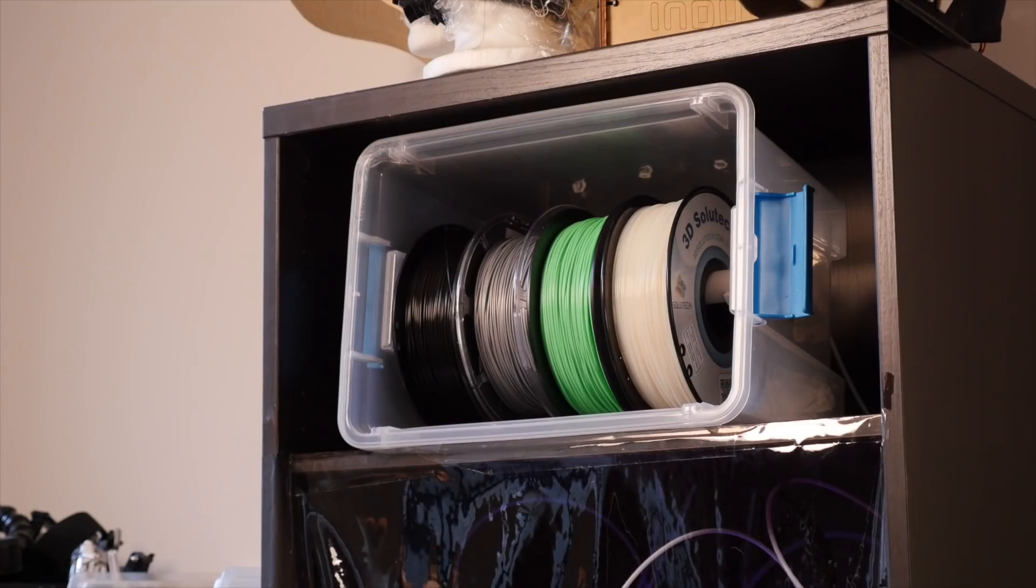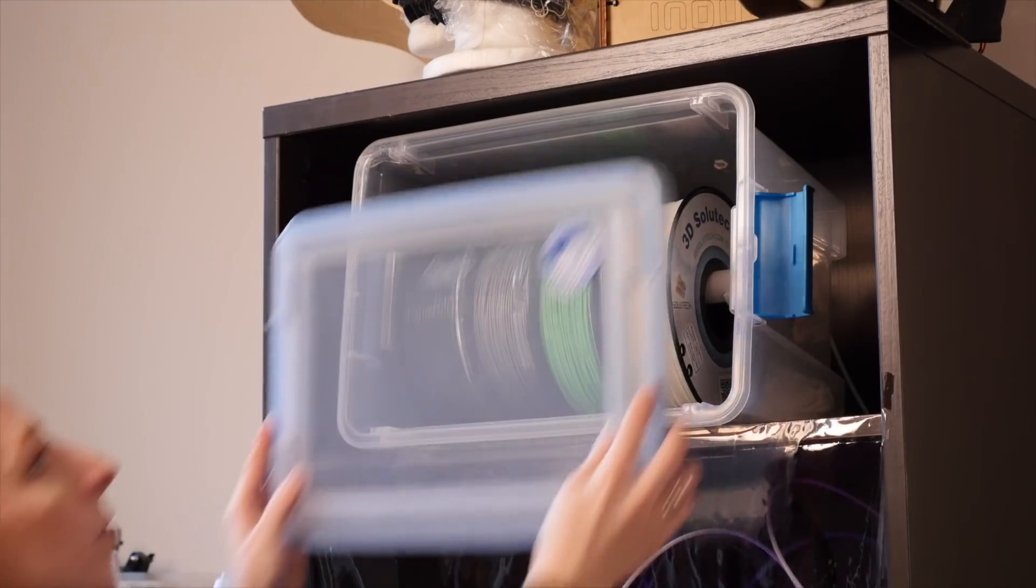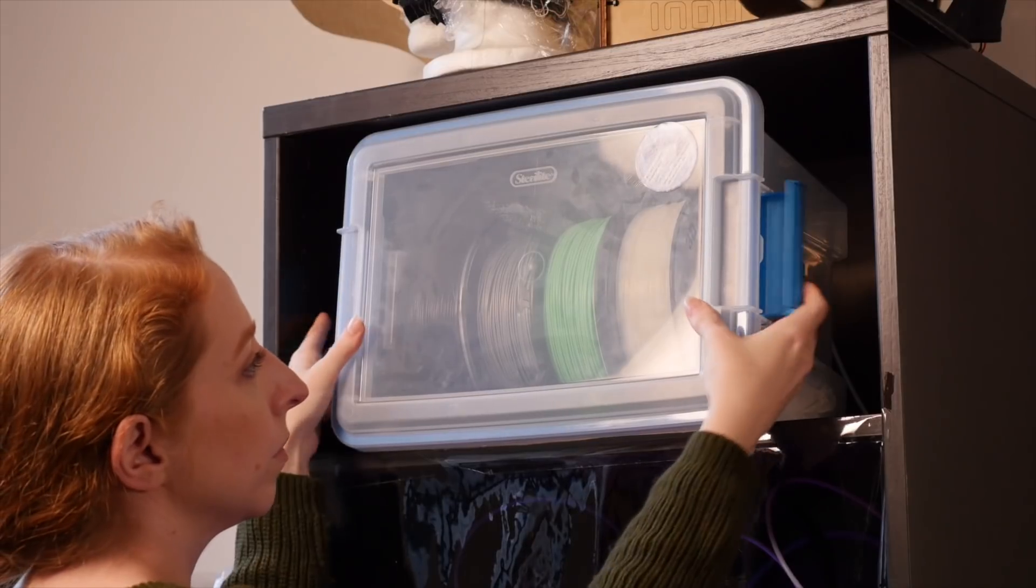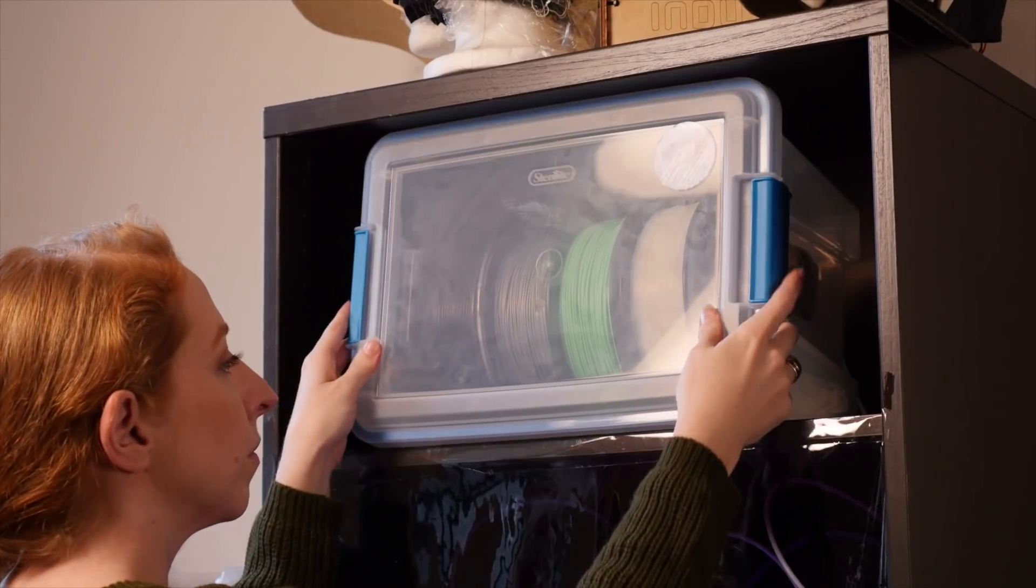Today I want to show you this dry box I made for my 3D printer filament. It protects the PLA from absorbing moisture from the air, which can cause failed prints and nozzle clogs. The box also dispenses the filament to the 3D printer, providing convenient storage. Let's get started.